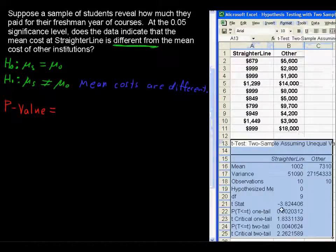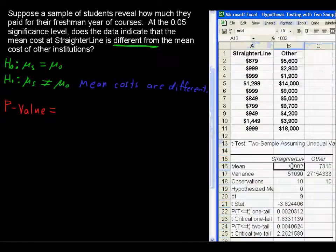We get a bunch of information. T-test, two sample, assuming unequal variances is the word that's running off of your screen there. We get the mean of each, the sample means. These are the sample means.